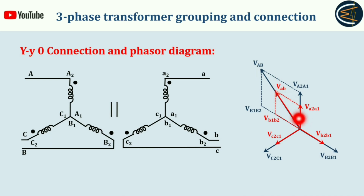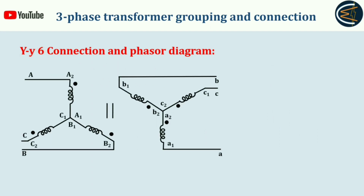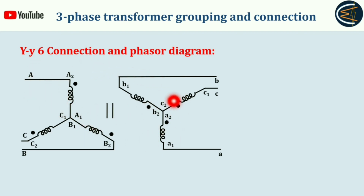Now let's discuss the YY6 connection. Previously we studied YY0; now it is YY6. Both primary and secondary sides are star connected, but here there is a difference: '0' means no phase displacement, but '6' means there is 180-degree phase displacement between the secondary side line voltage and the primary side line voltage. We draw the circuits in a specific way to represent this YY6 configuration.